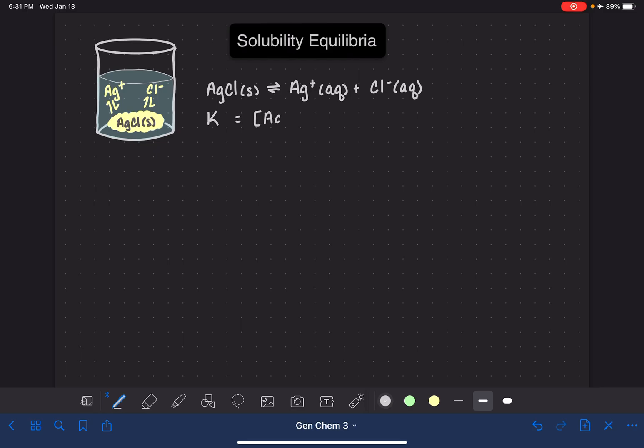which in this case is silver and chloride. The products over the reactants, each raised to their stoichiometric coefficients. Silver and chloride are each one. We leave out pure liquids and pure solids, which means that there's nothing on the left-hand side of the equation to write in this equilibrium expression.